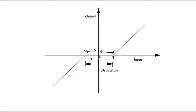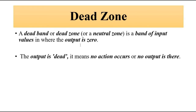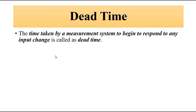In practice the dead zone is so small that it is almost impossible to show it clearly in an input-output relationship curve — the values are very small, almost invisible. Here I am just magnifying this to make it understandable. Dead time is the time taken by the measurement system to respond to any detectable input change.